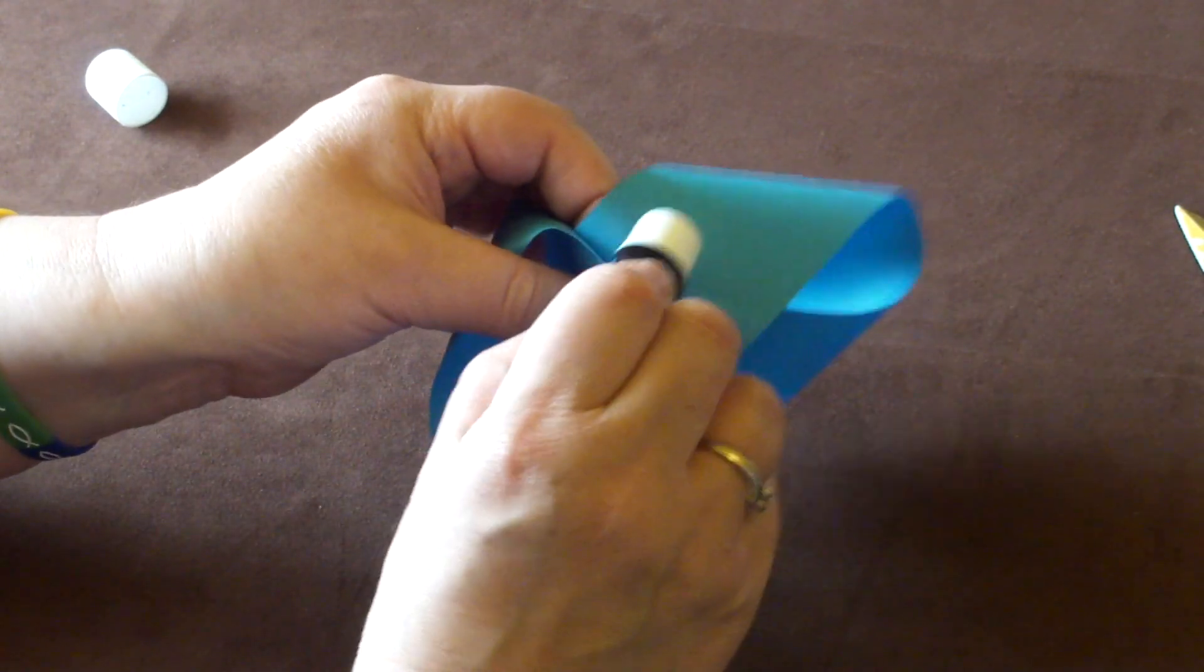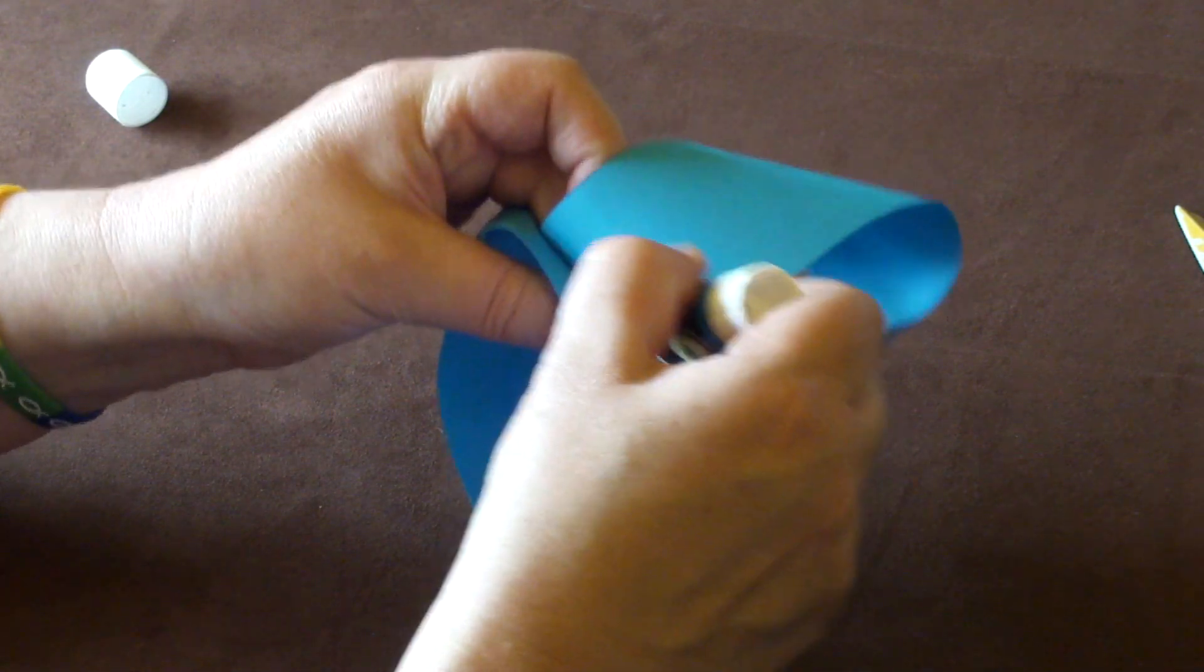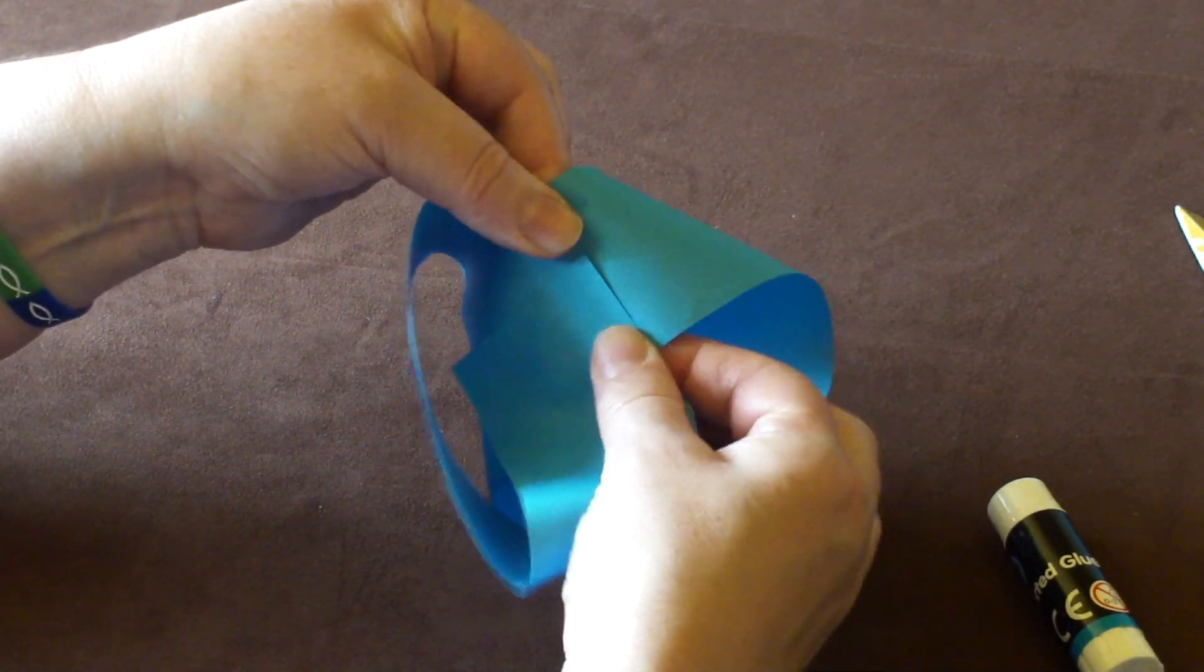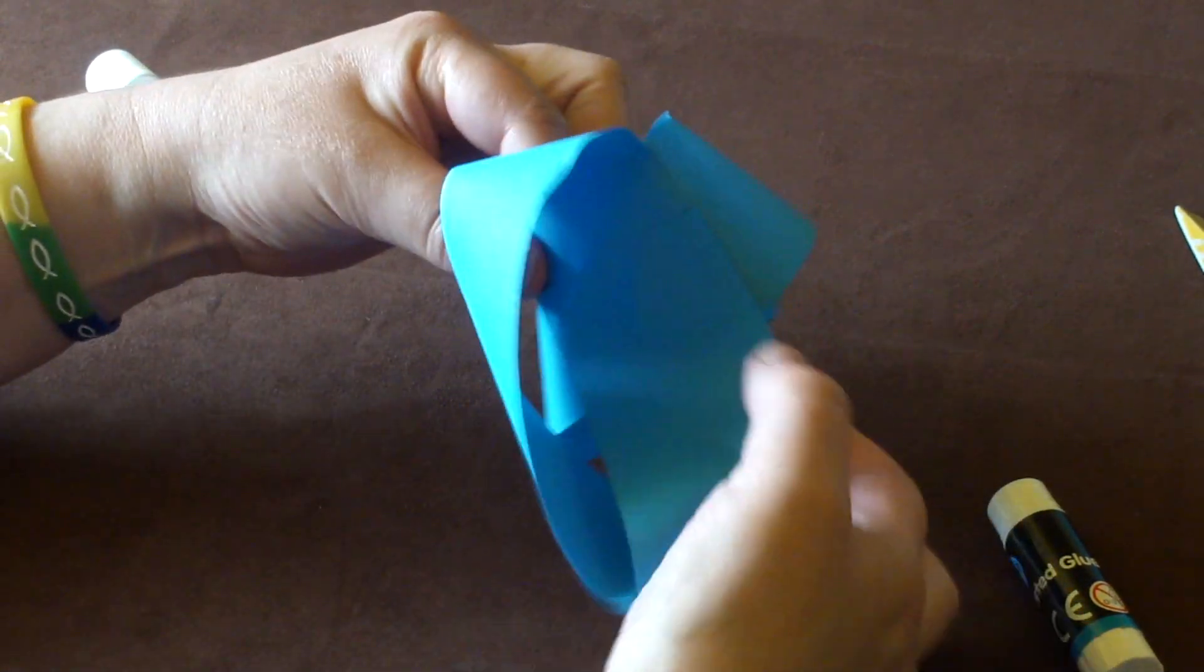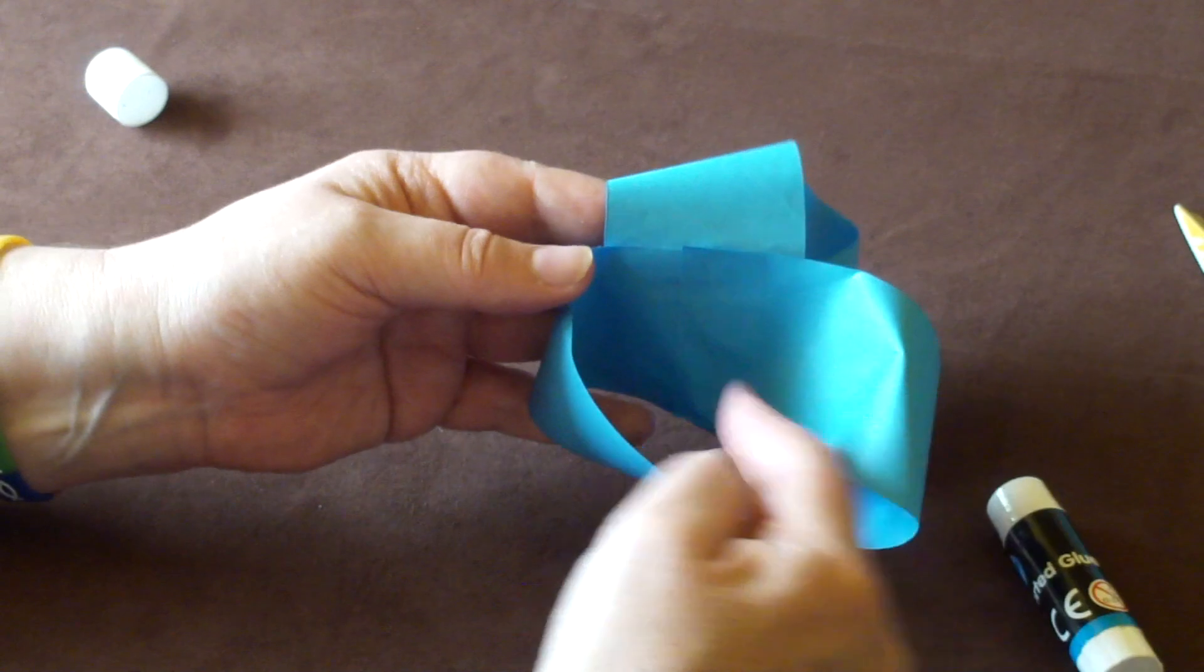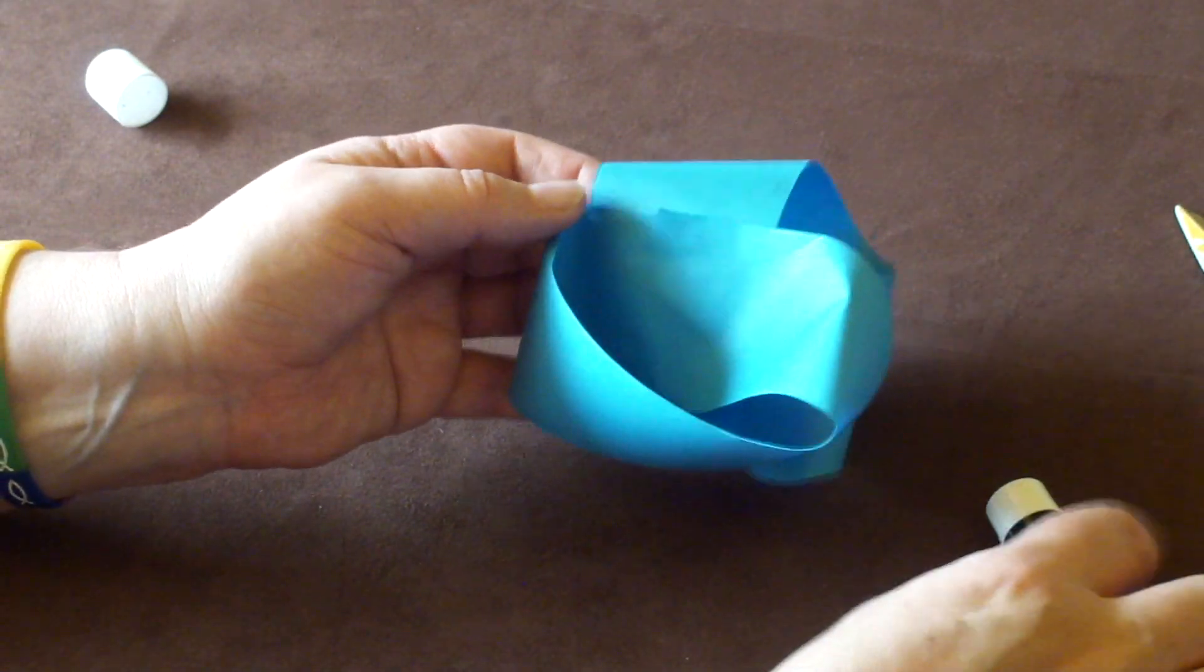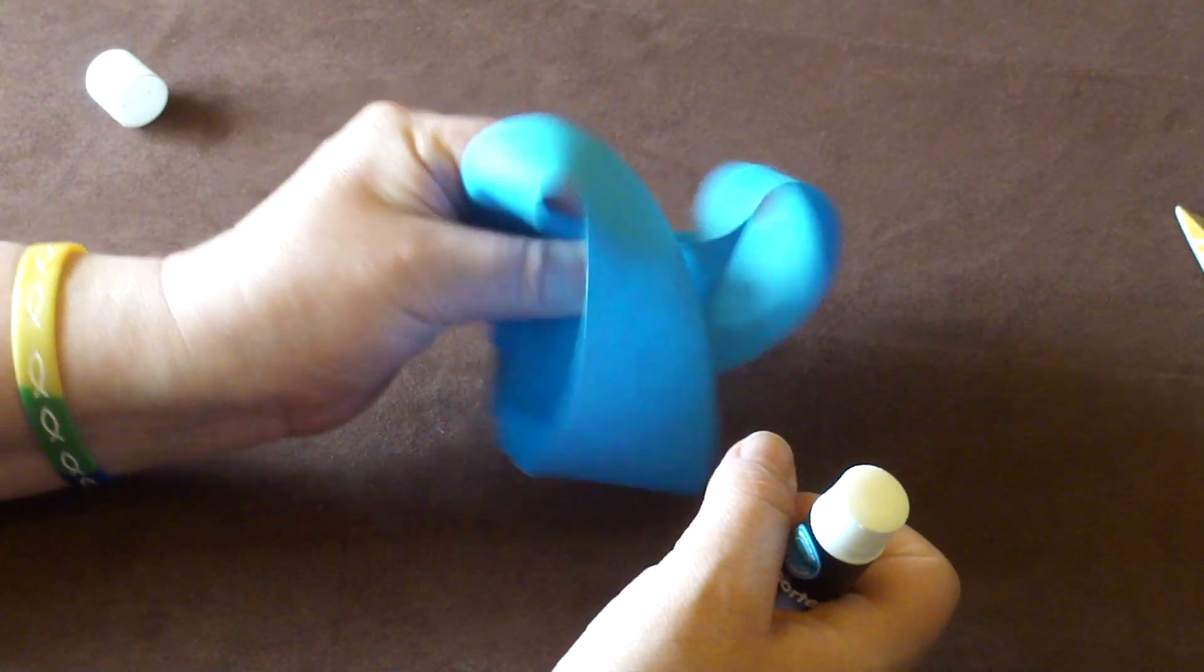I'm going to put a little bit of extra glue on these corners. It's important that it's very well glued together. Hopefully you can see that it's glued in a cross shape, with one Mobius strip running up and down, and one Mobius strip running side to side. Again, a little bit more glue in there.